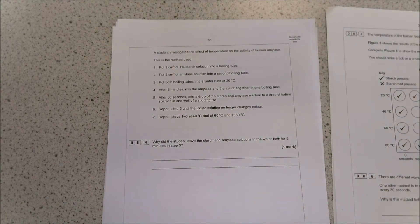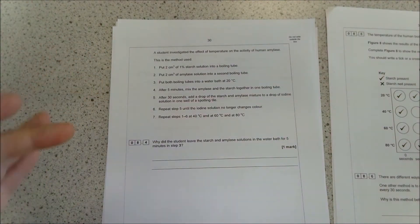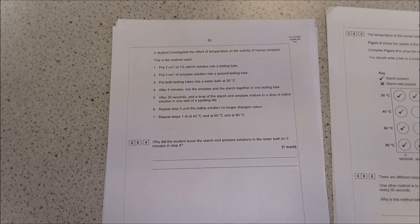It asks: why did the students leave the starch and amylase solutions in the water bath for five minutes in step three? Remember, whenever you're using any sort of liquid and you're changing the temperature, it takes time for it to get up to that temperature. It's not automatically going to be at the temperature that you want. If you don't leave it in there for long enough, then it won't get up to temperature. One way you might suggest to double check this is to put a thermometer into the liquid and check the temperature that way.